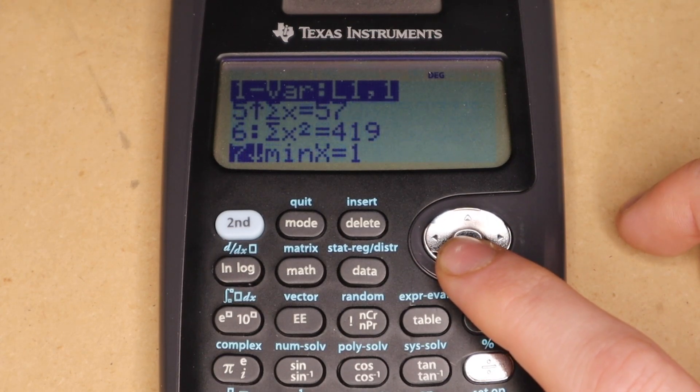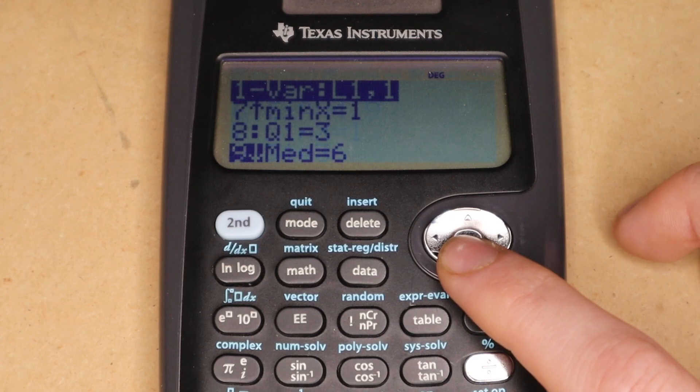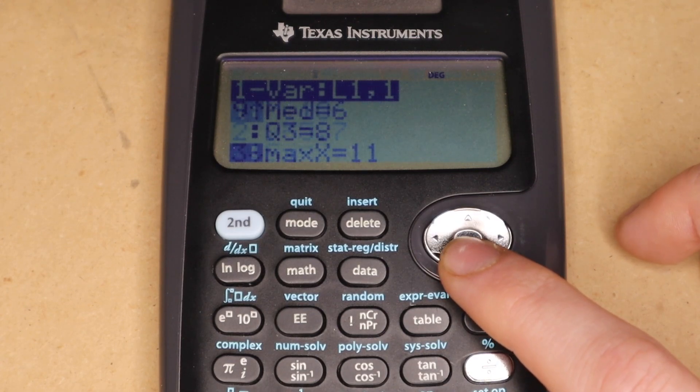But going into single variable statistics here, and then selecting my list one that I entered, I can get a ton of commonly used statistics variables. Sum, standard deviation, minimum, maximum, first quartile, median, third quartile.